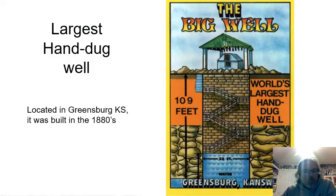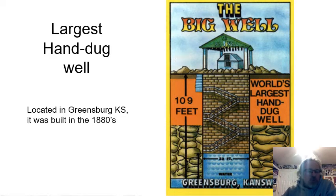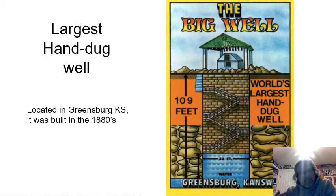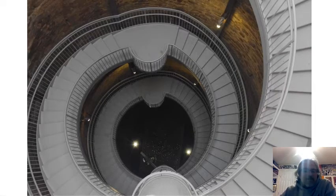A little bit of history: the largest hand-dug well is in Greensburg, Kansas. In the 1800s they dug down 109 feet and created a huge well — a huge source of water. At the time they wanted the railroad to come to their town, since old steam engines needed water to make steam. They said, 'Come bring the railroad to our town and you can have all the water you need.' Here's what it looks like today — it's now a tourist attraction you can walk down to the bottom of.